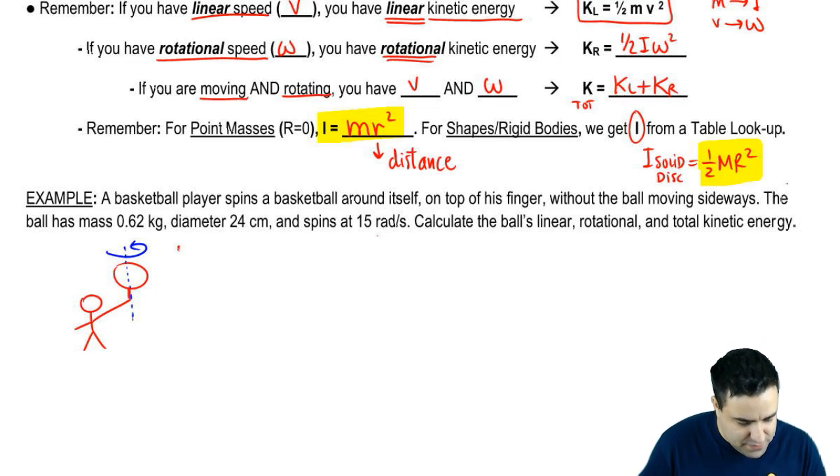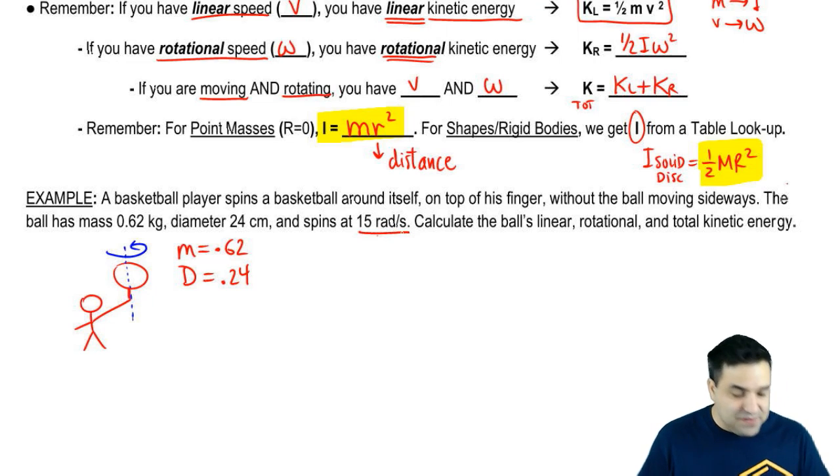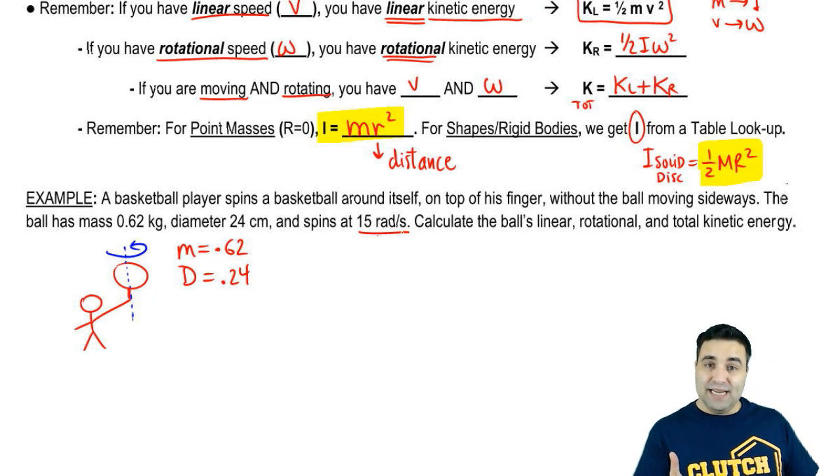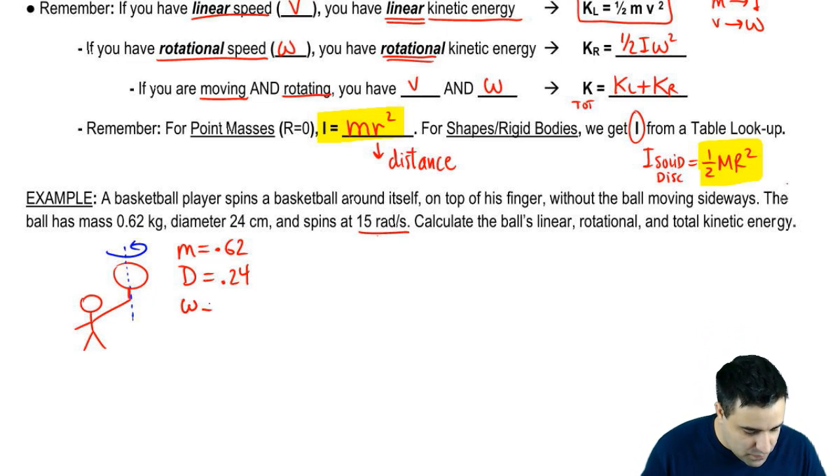And it says here, the ball has a mass of 0.62, a diameter of 24 centimeters, so 0.24 meters. And it spins at 15 radians per second. Radians per second is angular speed, angular velocity, omega.